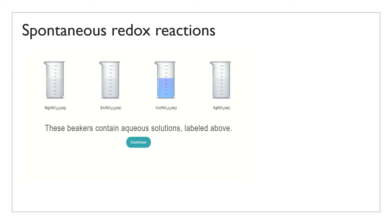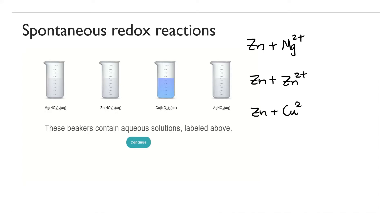I'm going to show you a simulation that I did, and you will have an opportunity to do something similar later. In this simulation I'm attempting to investigate any potential chemical reactions between zinc metal and different metal ions. I'm going to add zinc to four beakers, each containing a different metal ion: zinc and Mg2+, zinc and Zn2+, zinc and copper ion, and lastly zinc and silver ion.